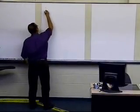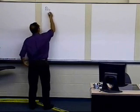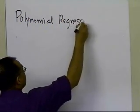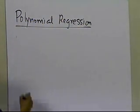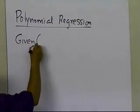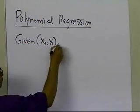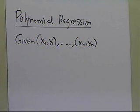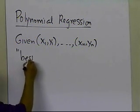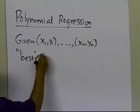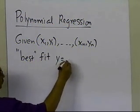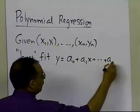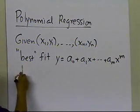In this segment, we're going to derive the formula for polynomial regression. The problem is as follows: you are given n data points — x1, y1, all the way up to xn, yn — and what you want to do is best fit, based on the least squares assumption, y = a0 + a1x + ... + am·x^m to the data.